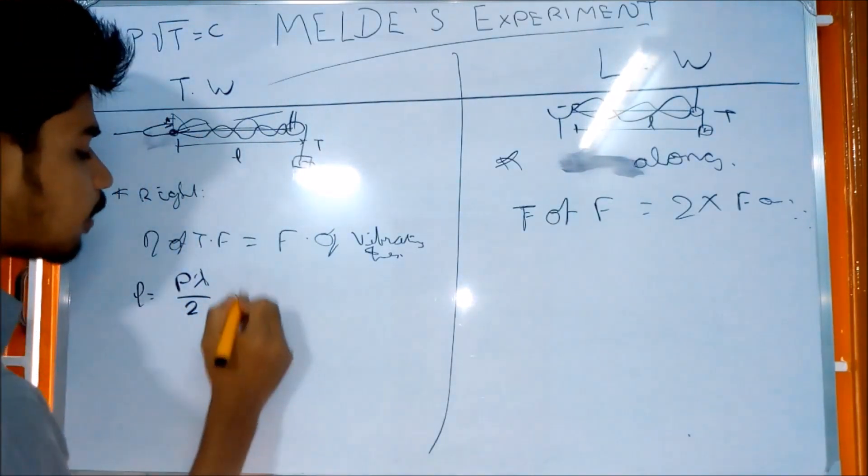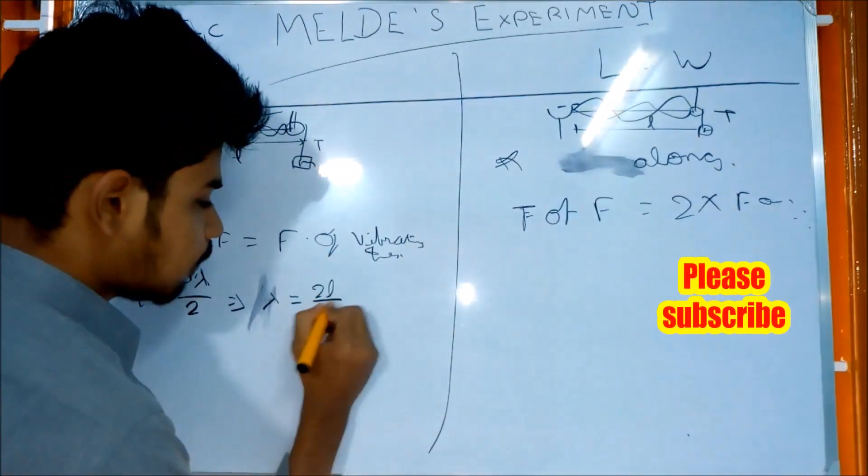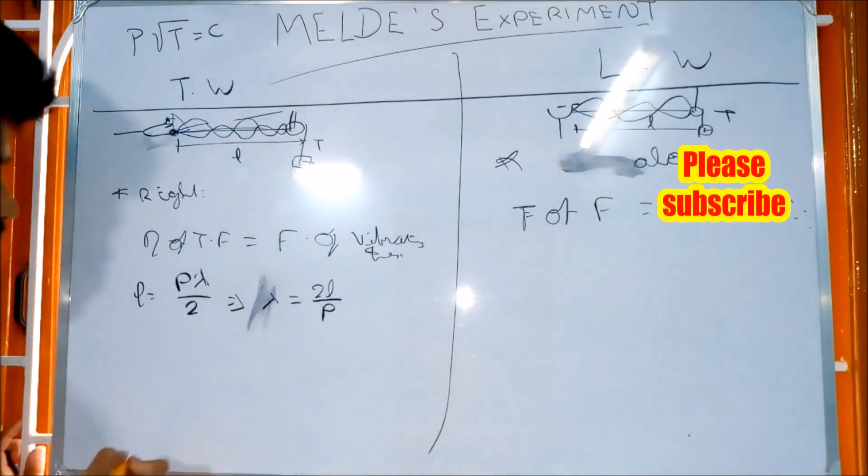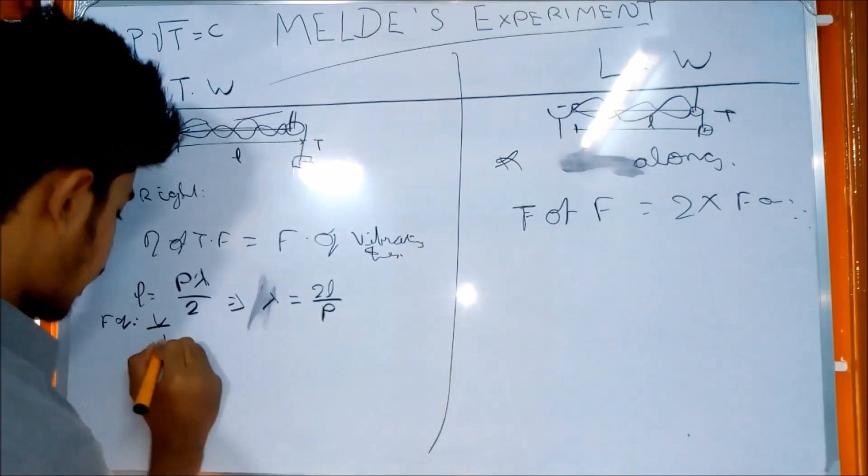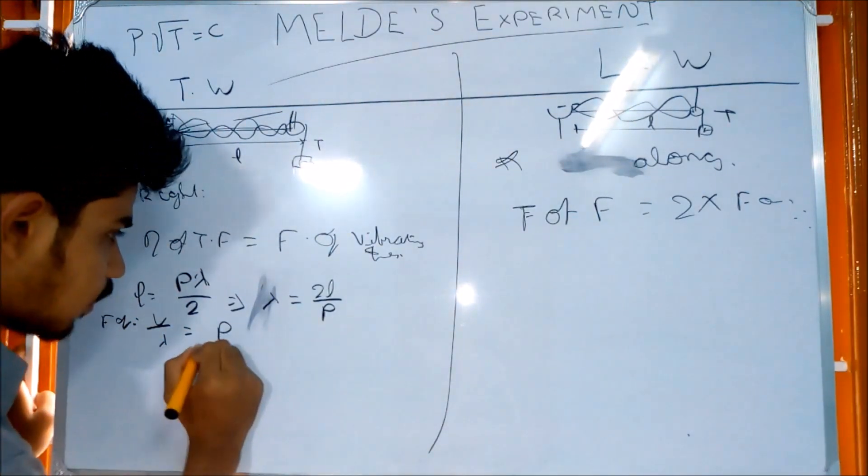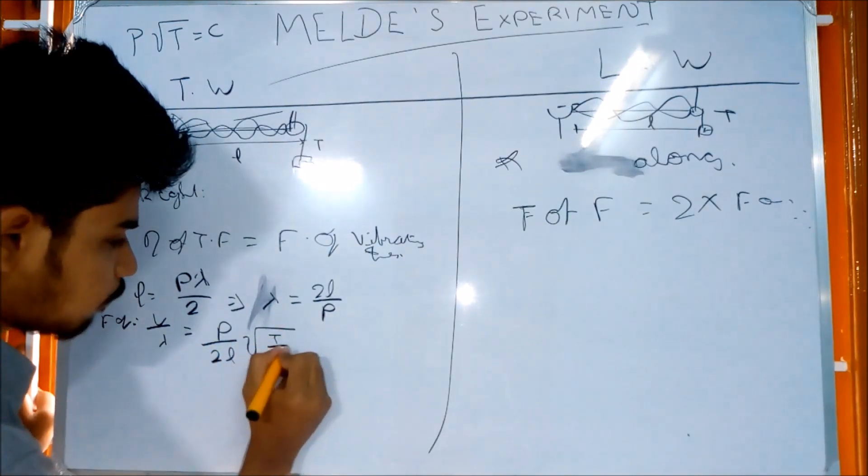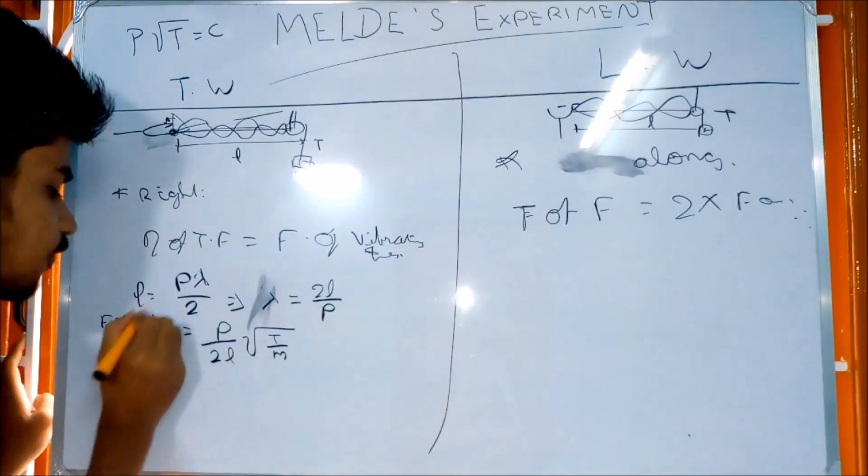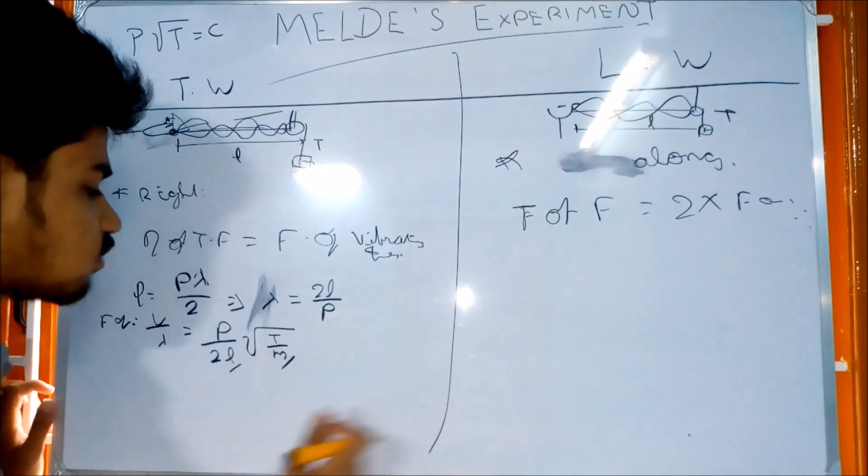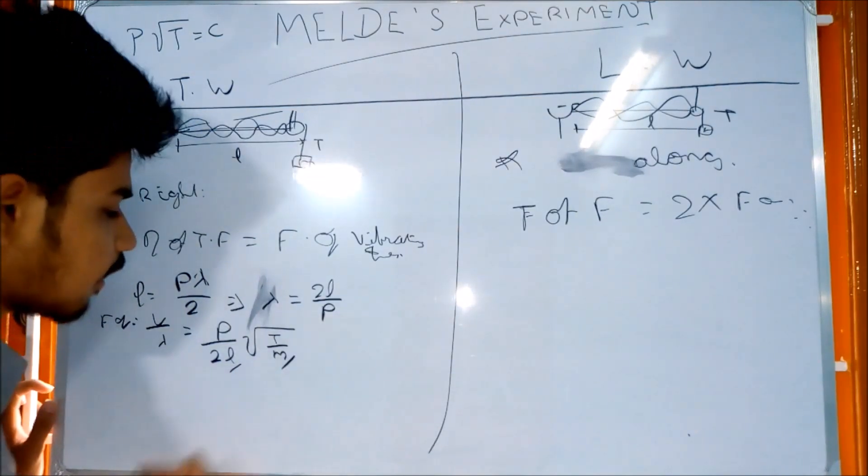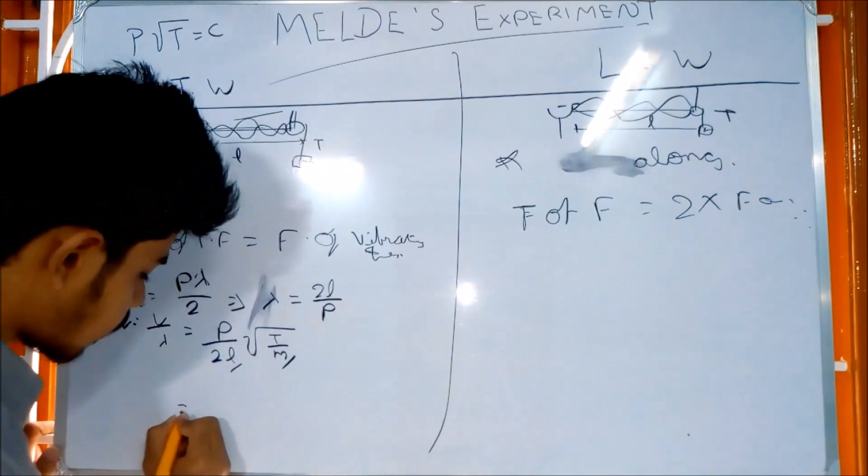Lambda equals 2L by P. Frequency is equal to V by lambda. So frequency equals P over 2L times root of T by M. We have this constant, the number of loops.